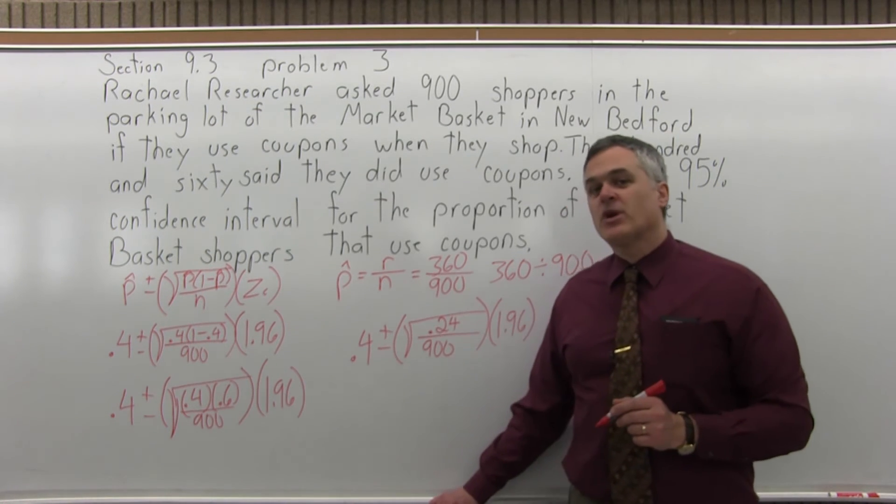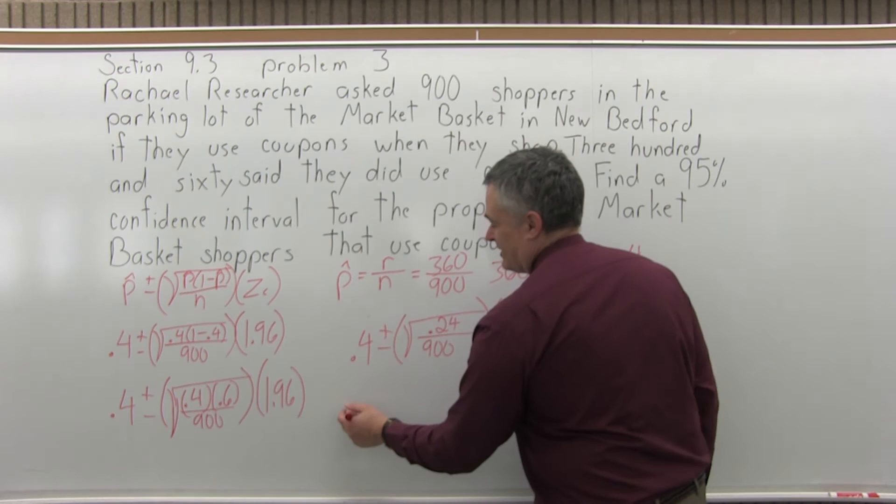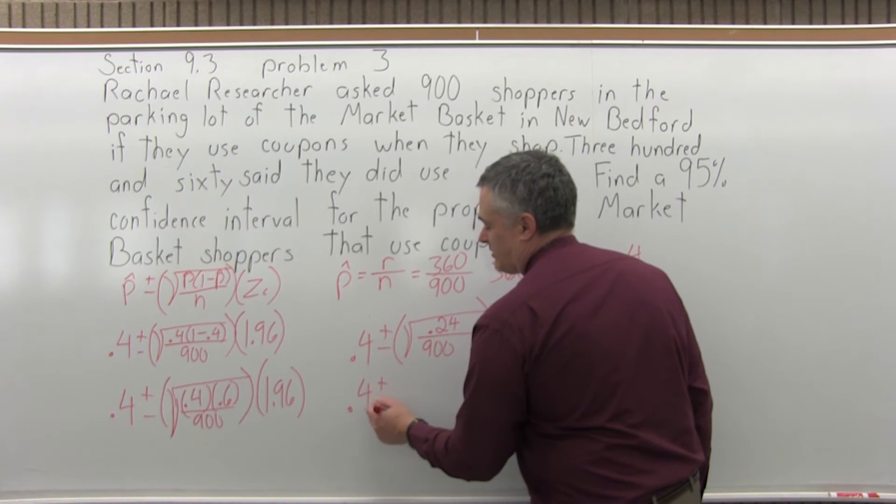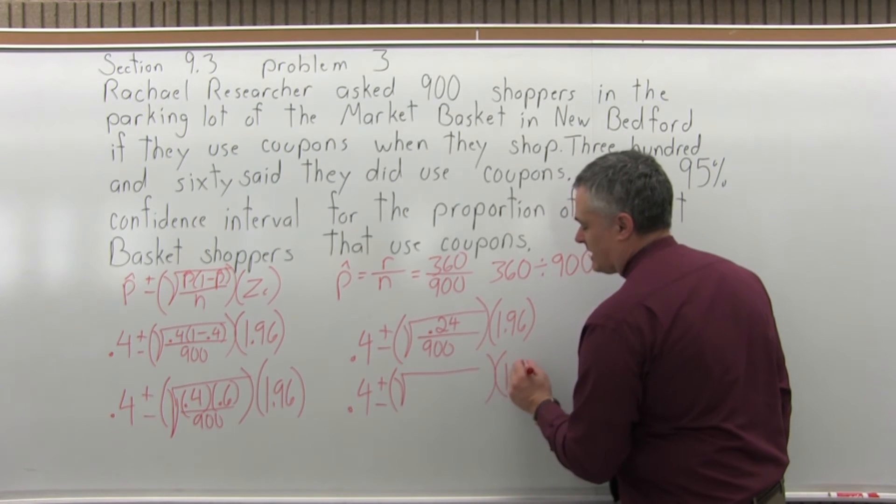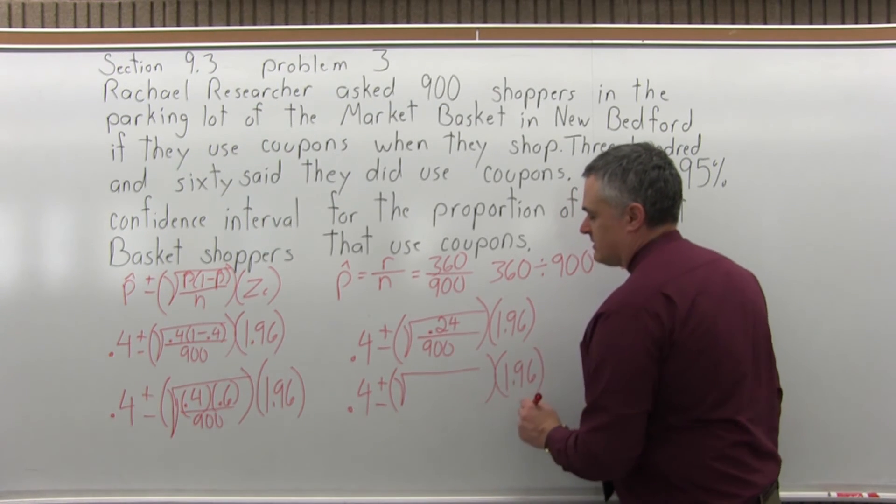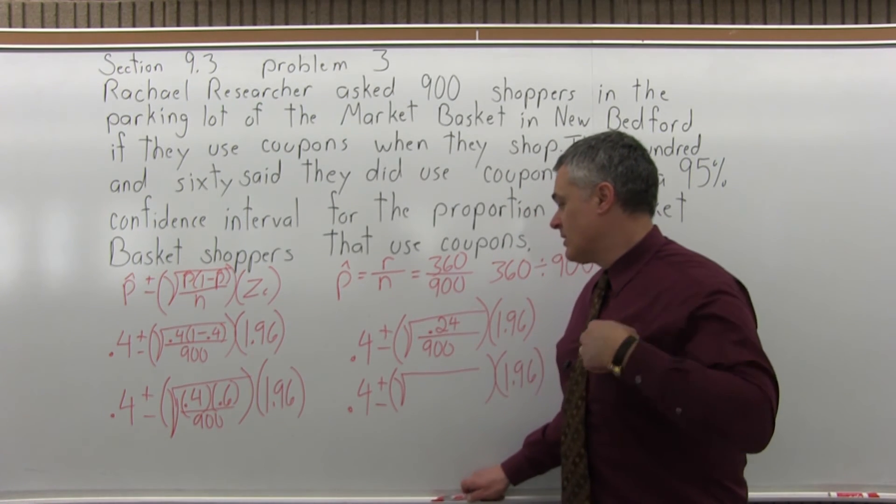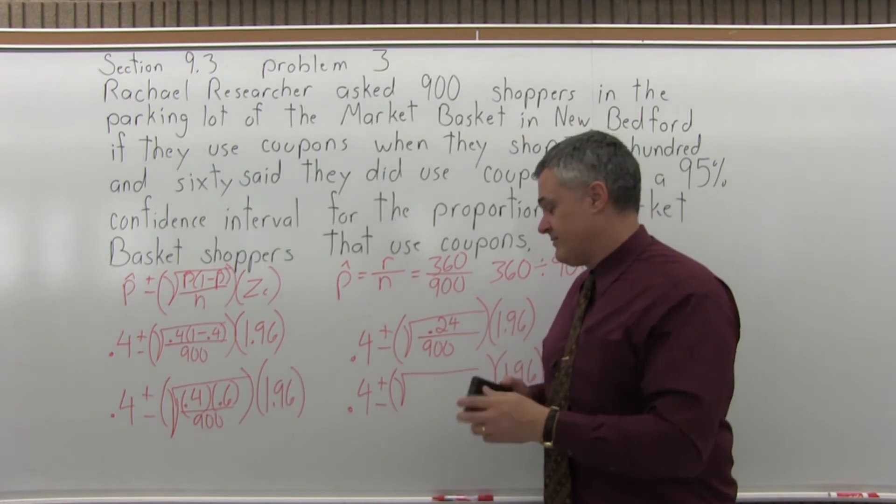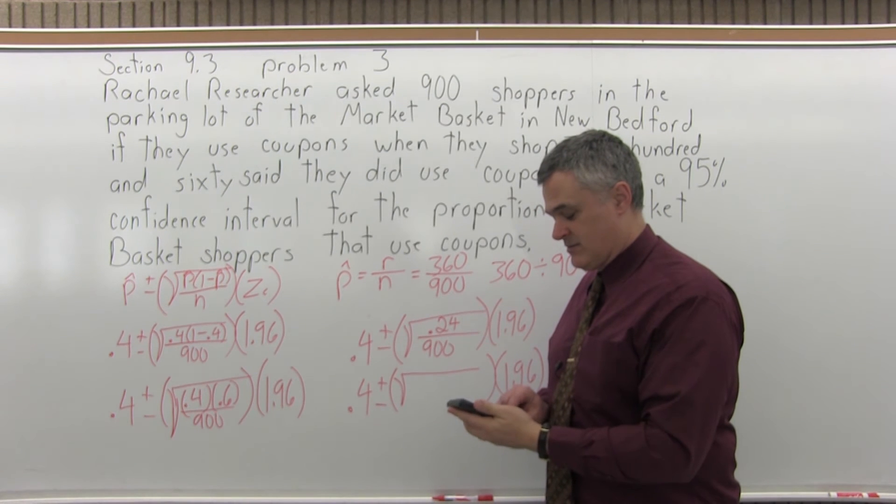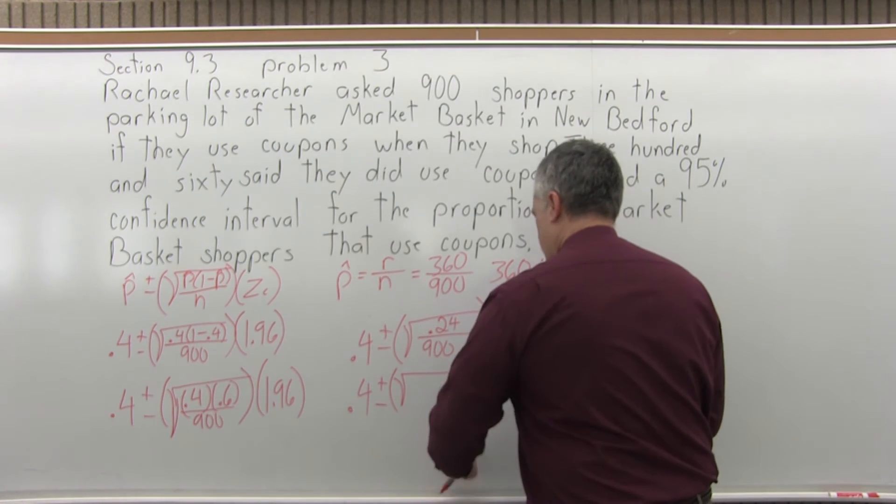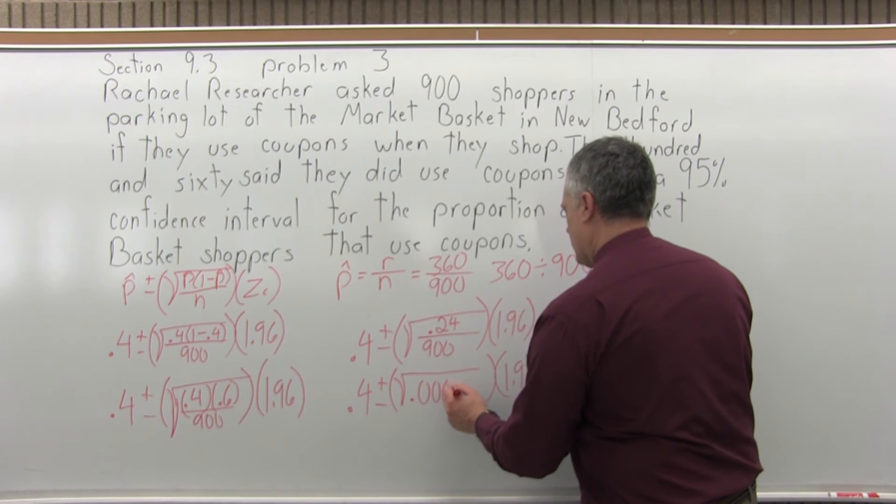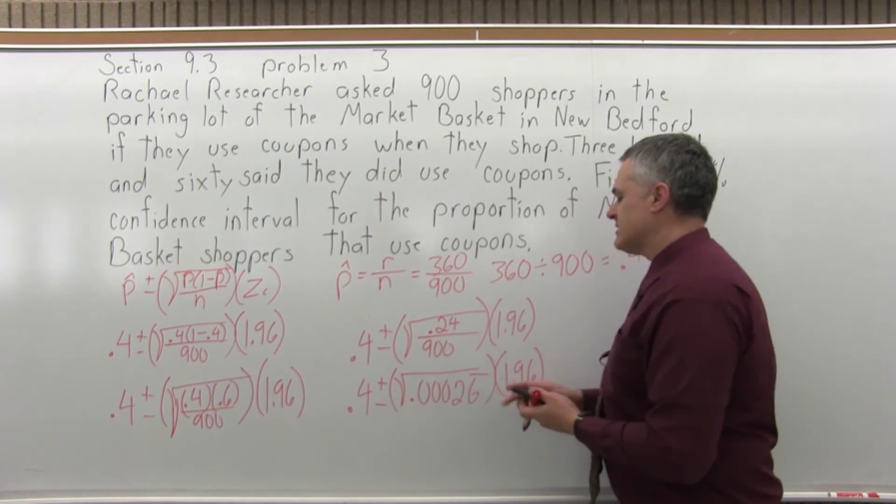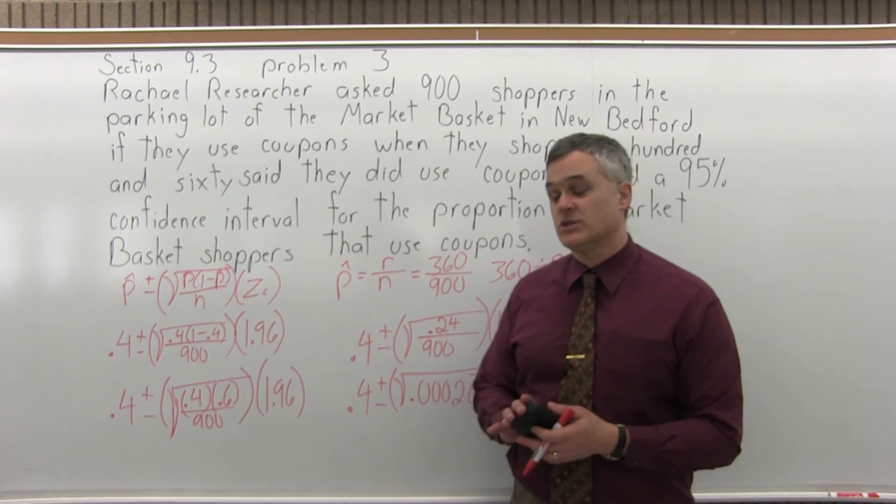Now I've probably gone about as far as I'm going to go without my calculator. So I have 0.4 plus or minus the square root of an answer I'm going to get in a second times 1.96. So 0.24 divide by 900. The number under the square root is 0.0002666666. The sixes will go on forever, so I just put a line over it.